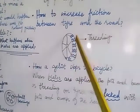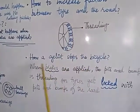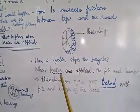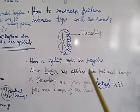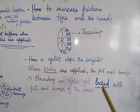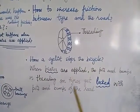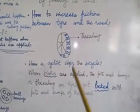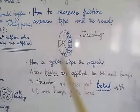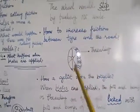Threading increases the gripping power of the tire with the road. When brakes are applied, the pits and bumps or the threading on the tires get locked with the pits and bumps of the road. The pressing force on the tire is increased and this locking connection stops the bicycle.